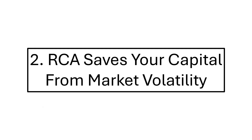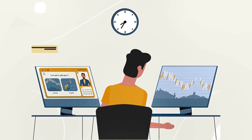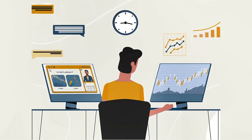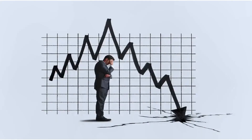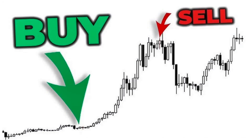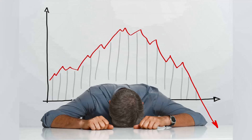Advantage number two: RCA saves your capital from market volatility. Seasoned investors, especially option traders, make volatility their best friend — the higher the volatility, the bigger the profits. However, for a small investor, high volatility can wipe out their capital in a single trading session. The RCA approach lets you protect your capital from the harmful effects of volatility. For example, if the market crashes due to extreme volatility, you will get more units, and when the market eventually goes up, so will your profit margin. This reduces the risk of making significant investments at the wrong time, such as during market peaks.